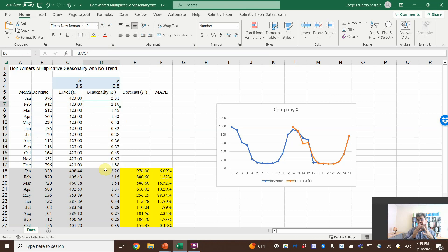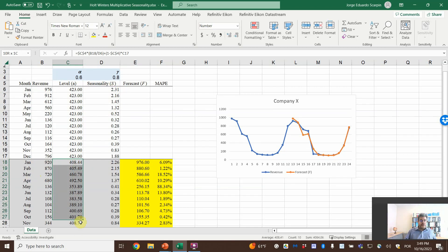However, from the second year on, and the more numbers we have the better, we have the formula: alpha, cell C4, times actual number divided by the seasonality with a delay of 12, plus one minus C4 times the previous level. And we copy and paste it for every month.